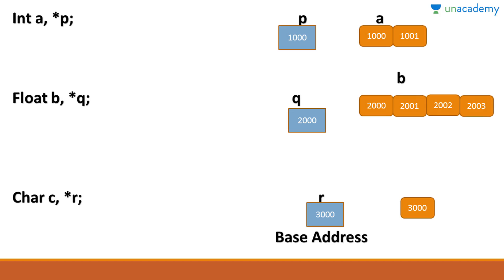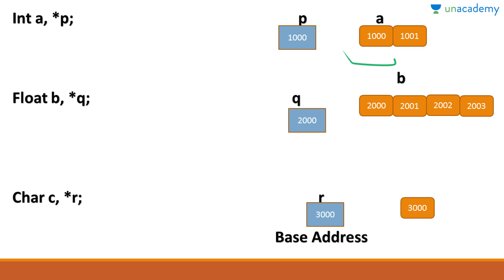In this example, I have declared a pointer of int type and a variable of int type. Pointer p with asterisk p will hold the address of a. A pointer always stores the base address of a variable, which is the address of the first element of that array — here 1000. For float b with pointer asterisk q, the base address is 2000. For char c with pointer asterisk r, the base address is 3000.